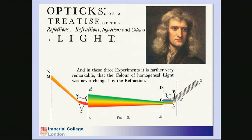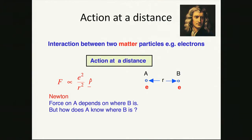Newton did these dramatic experiments where he broke up the components of a white light field with a prism. He dispersed them, then combined them again with another prism and got back white light. There's this lovely phrase: 'the color of homogeneous light was never changed by the refraction.' If you look at Newtonian views, it was kind of odd action at a distance. If you imagine two particles A and B separated by distance R — they might be electric charges — the force goes as Z squared over R squared.